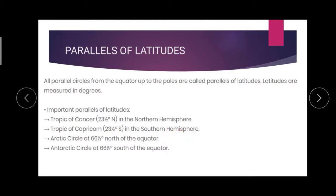Third one is Arctic Circle — that is at 66½° north of the equator. Last one is Antarctic Circle — its degree is 66½° south.